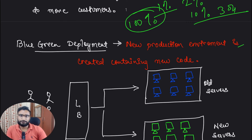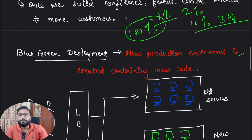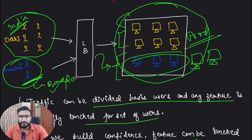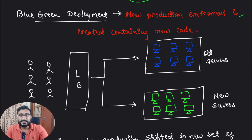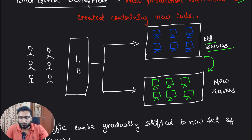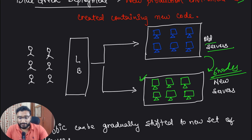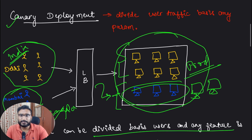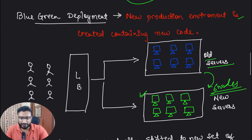Now let's talk about Blue-Green deployment. There is one fundamental difference compared to Canary deployment. In Canary deployment, you are replacing servers within the existing infrastructure. In Blue-Green deployment, you create a completely new infrastructure where the new code will be deployed. Let's say you have 6 old servers with the existing production code — you create a full replica with 6 new nodes where the new code is deployed. The key difference is that in Canary you divide traffic within the existing system, but in Blue-Green you create an entirely new system.